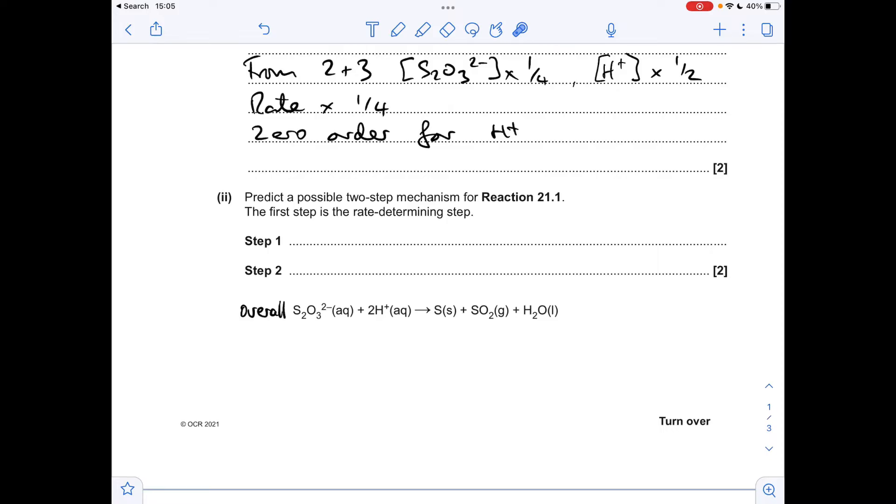So moving on to the mechanism, there's a few answers. I've got three, so I'll give you all three of those. But the thing that they must all have in common is they must have one mole of thiosulfate as the reactant in step one, because that's the only thing that features in the rate equation and it's first order. So that is absolutely essential to have that there.